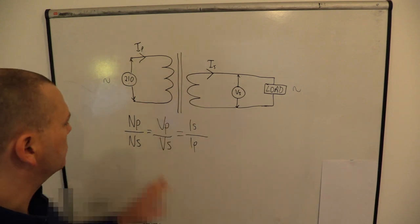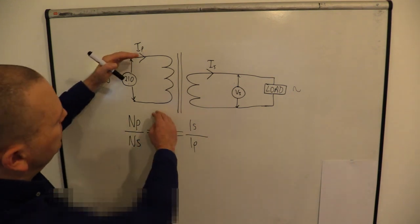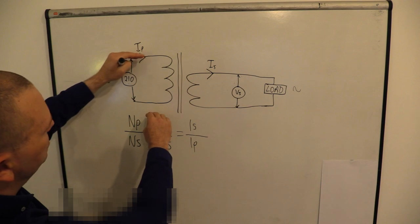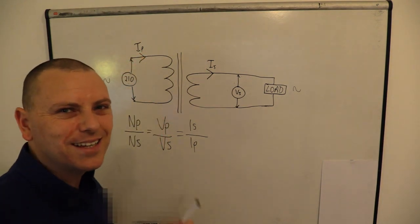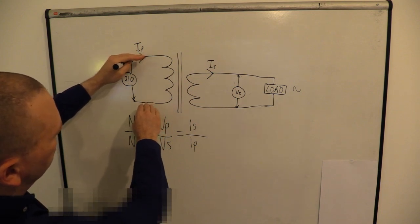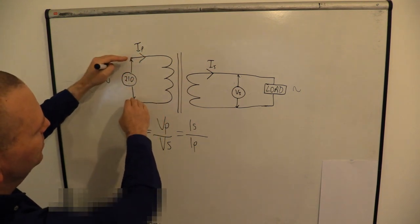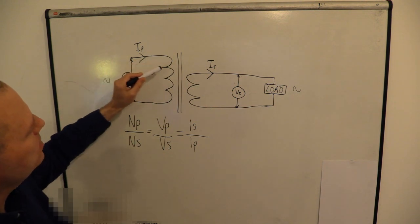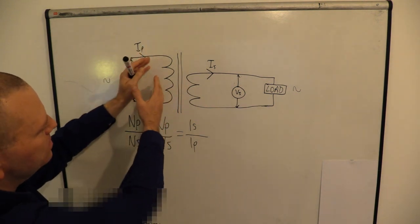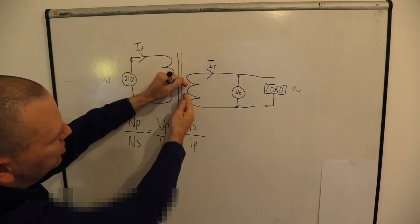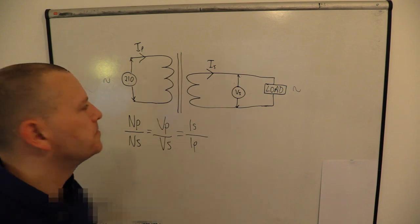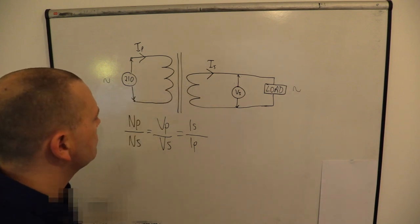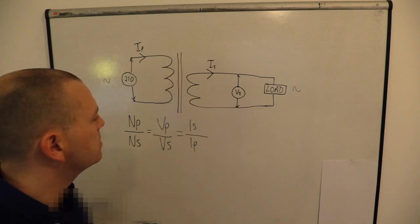Think of it as a physical thing. On the primary we've got a big distance between the positive and negative side - big potential difference, big voltage. On the secondary, small difference, smaller voltage. And then think about the current - on the primary it's got lots of space to spread out, so it's less intense. But on the secondary it's been compressed into a small space, so it's more intense. So the voltage comes down but the intensity of the current increases. That's in a nutshell how transformers work.